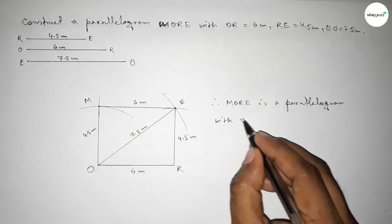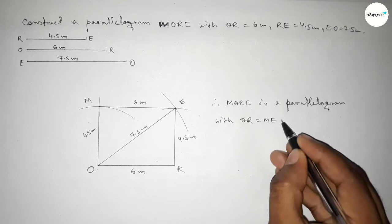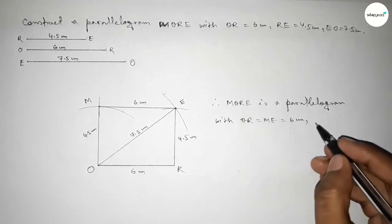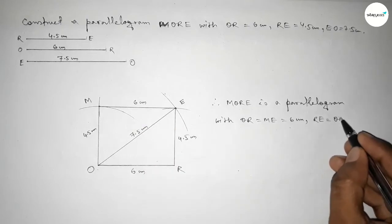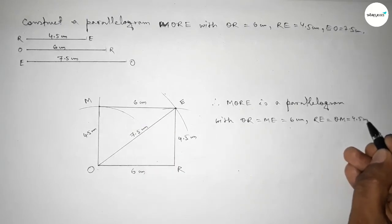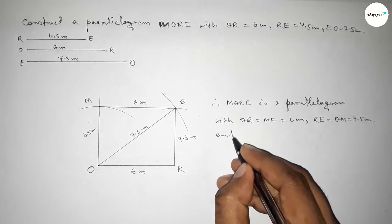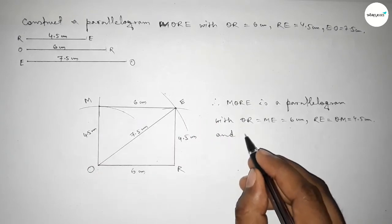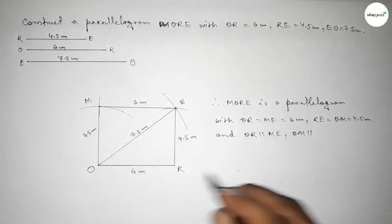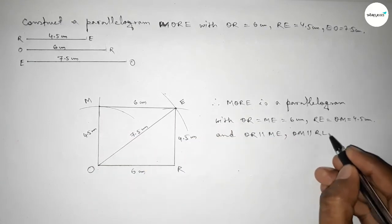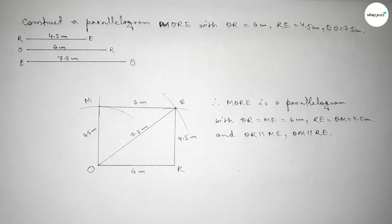Here the two equal sides: OR equal to ME equal to 6 centimeters, and RE equal to OM equal to 4.5 centimeters. The side OR is parallel to ME, and the side OM is parallel to RE. That's all — thanks for watching. If this video is helpful to you, please share it with your friends. Thanks.